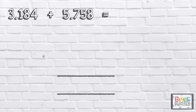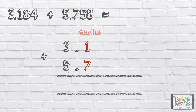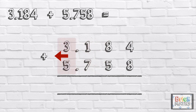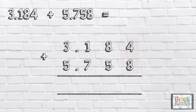Let's look at one more: three point one eight four add five point seven five eight. First we need to line the numbers up correctly. Now that our columns are set out correctly we can add the digits. Pause the video to give you time to work out the answer. Press play when you're done. So let's start with the thousandths: four add eight, which is twelve.